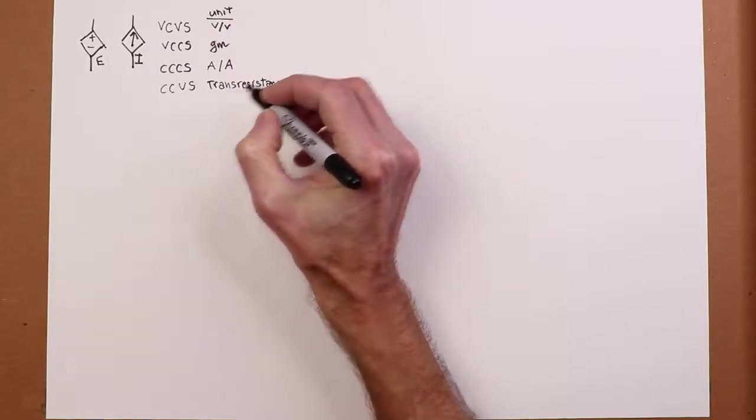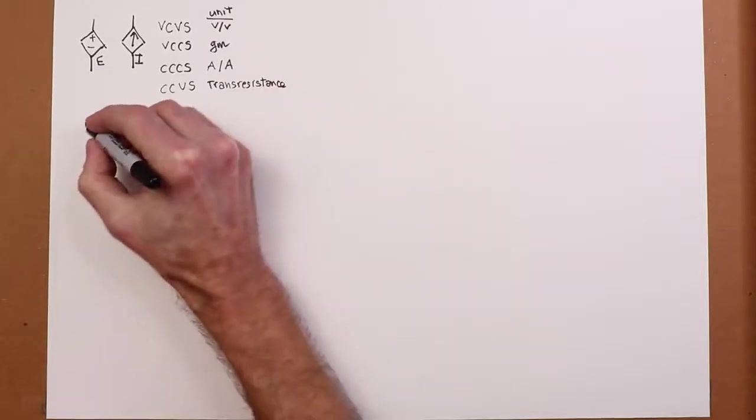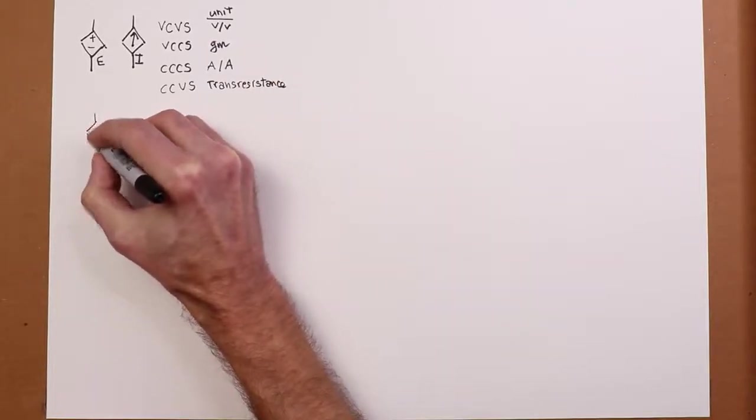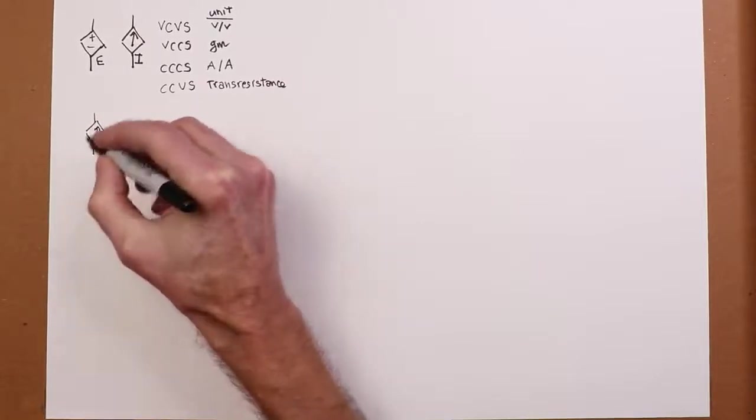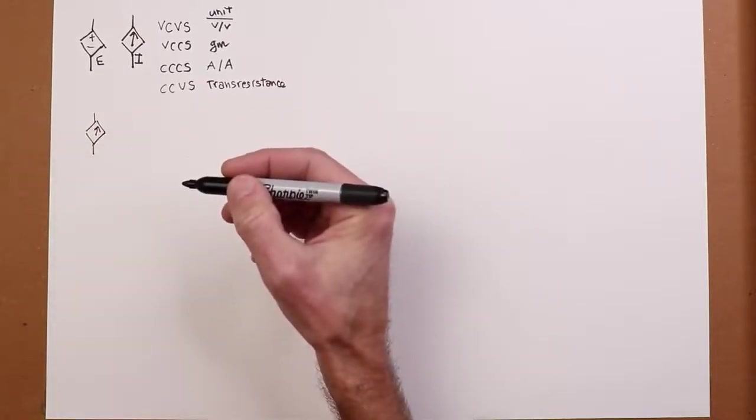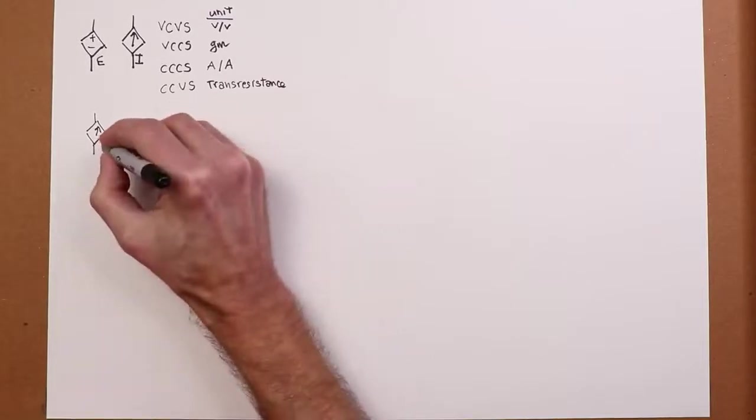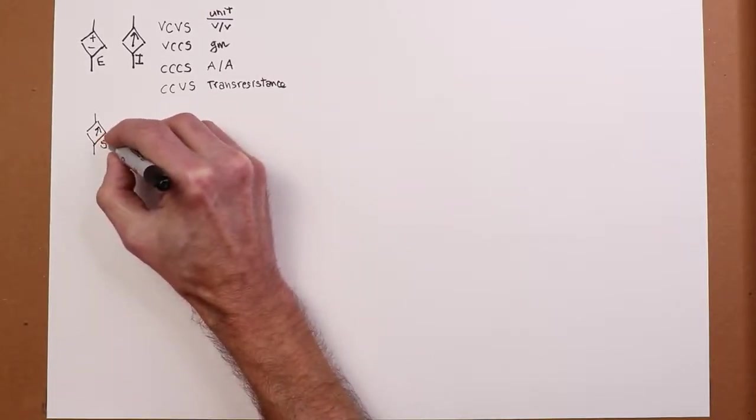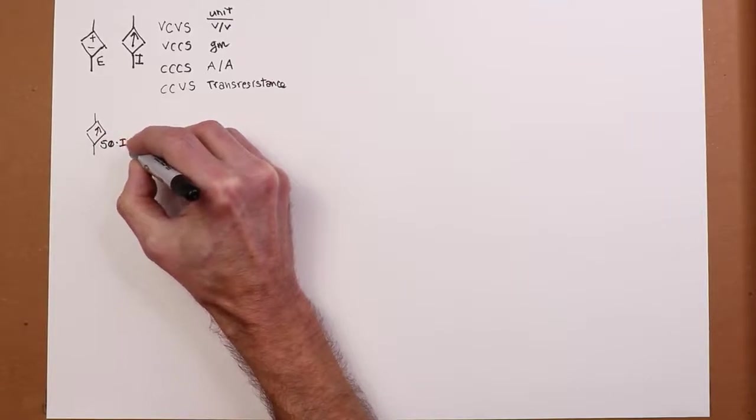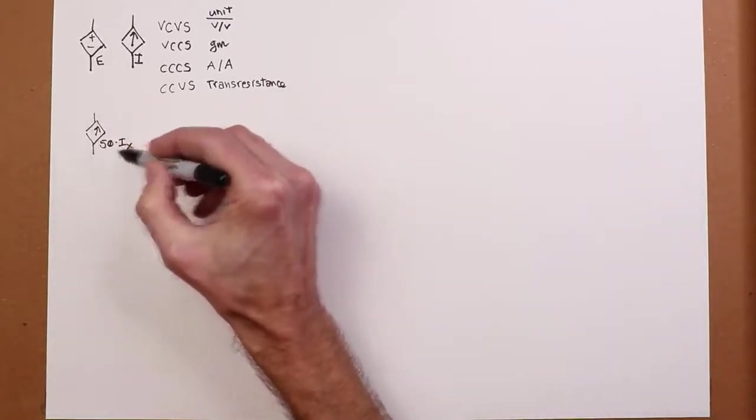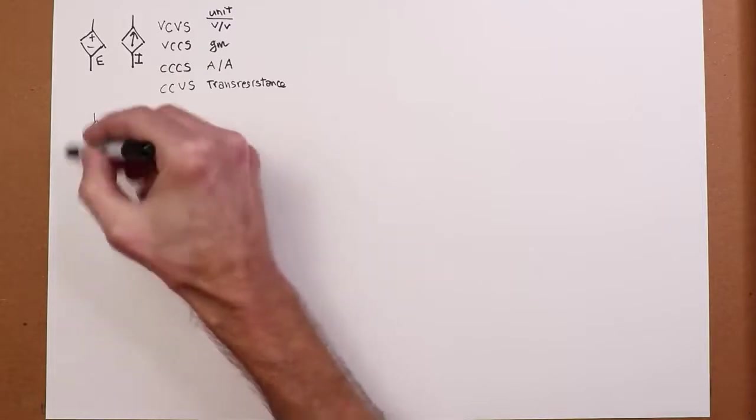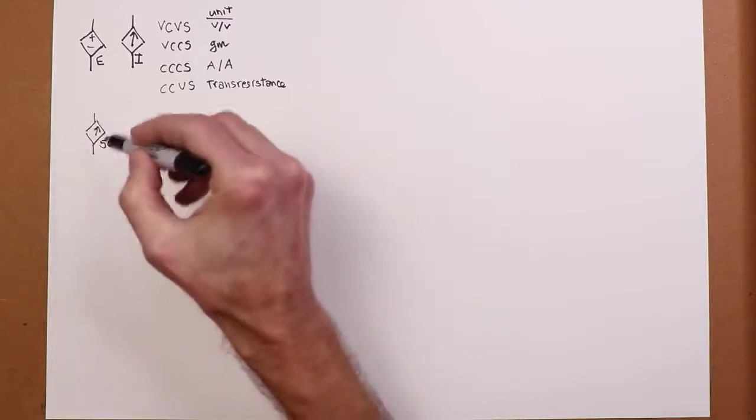So in a circuit, you might see a source. I'll just use a current source here. And this might be something like 50 times Ix. So the value of this current is 50 times this other current, Ix. So you'd have to know what Ix is elsewhere in the circuit.